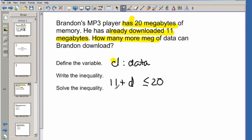So how do we solve it? We want D by ourselves, so let's subtract 11 from both sides. We end up with D is less than or equal to 9. So basically, Brandon can download any amount of data that's less than or equal to 9 meg. So the data has to be less than or equal to 9 meg.